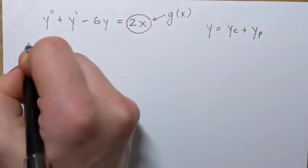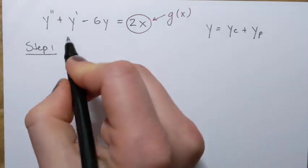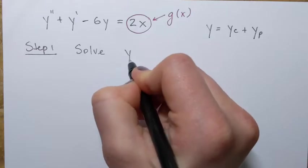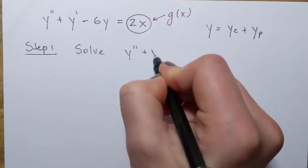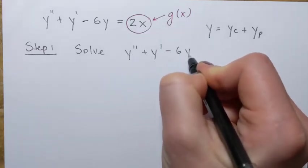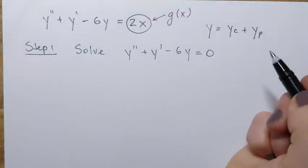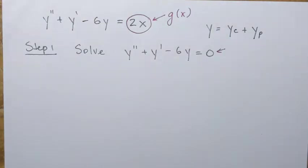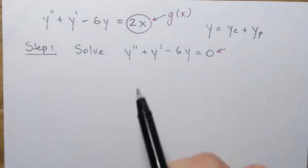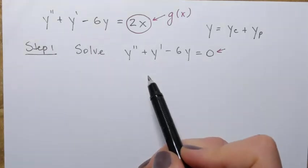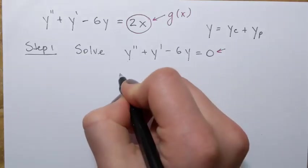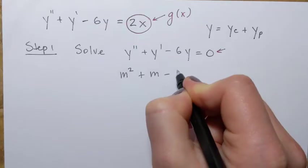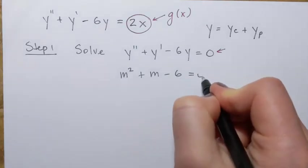The complementary function means we need to solve the following homogeneous equation: y double prime plus y prime minus 6y equals 0. Zero on the right-hand side means it's homogeneous. To solve this equation, we're going to obtain the characteristic equation: m squared plus m minus 6 equals 0.